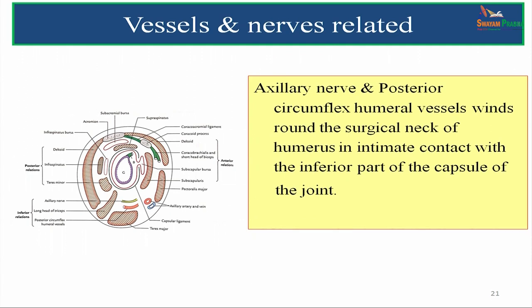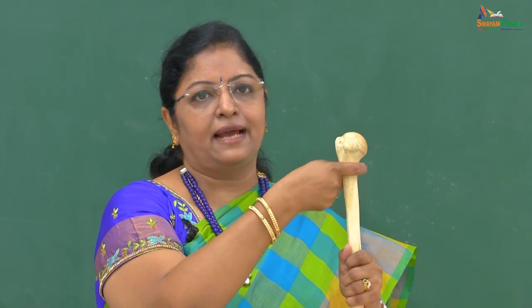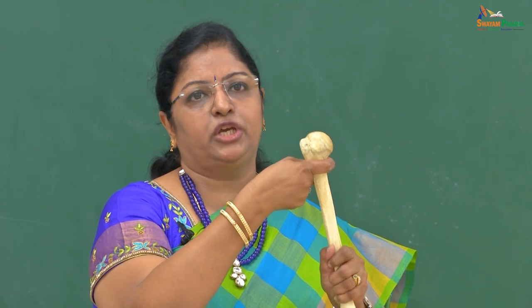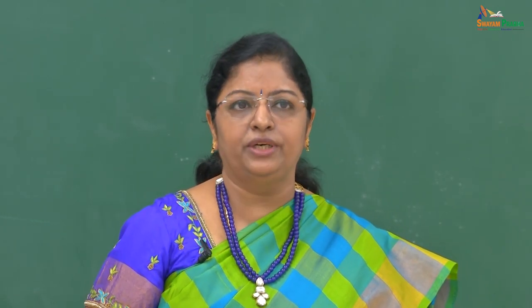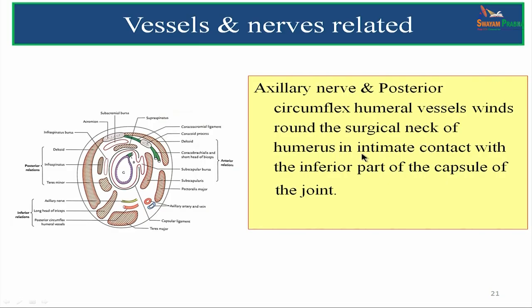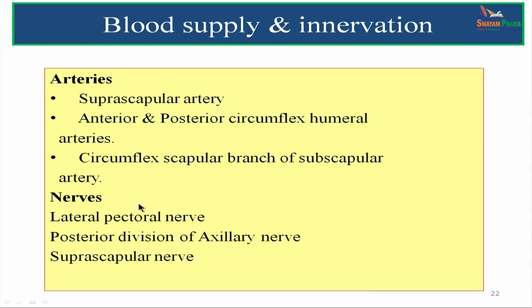The axillary nerve and posterior circumflex humeral vessels wind around the surgical neck of the humerus, in intimate contact with the inferior part of the capsule. This relationship is very important because when the head of the shoulder slips downwards, it can impinge upon the axillary nerve and posterior circumflex humeral vessels. The arteries supplying the shoulder joint are the suprascapular artery, anterior and posterior circumflex humeral arteries, and the circumflex scapular branch of the subscapular artery. The nerves are the lateral pectoral nerve, posterior division of the axillary nerve, and the suprascapular nerve.